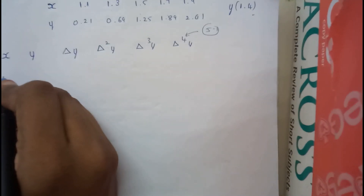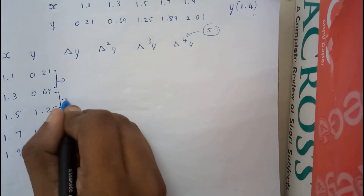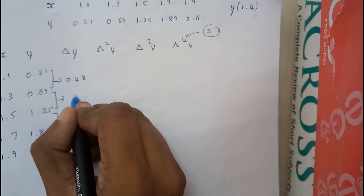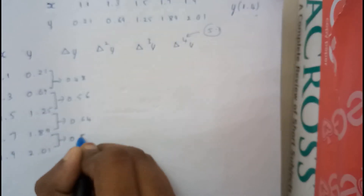Writing the same x and y values in the table: x = 1.1, 1.3, 1.5, 1.7, 1.9 and y = 0.21, 0.69, 1.25, 1.89, 2.61. For Δy, we subtract consecutive y values and write the result in the middle. The differences are: 0.48, 0.56, 0.64, 0.72.